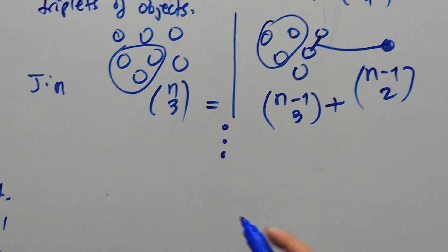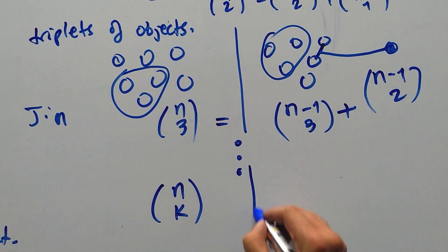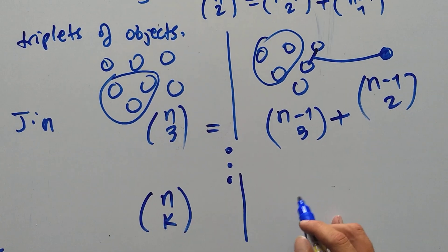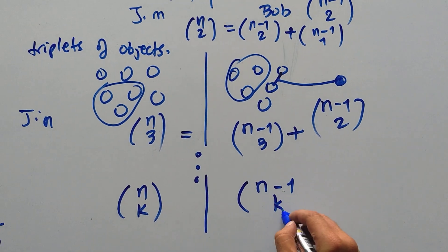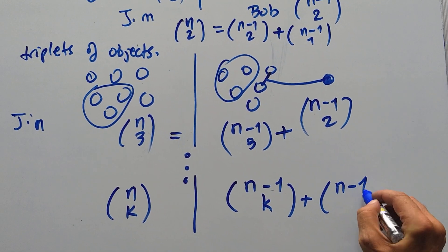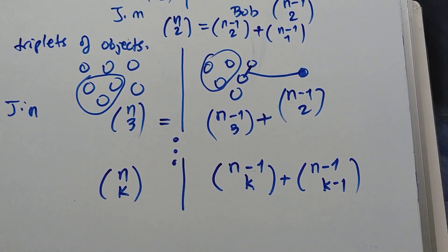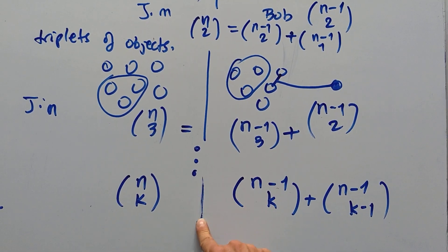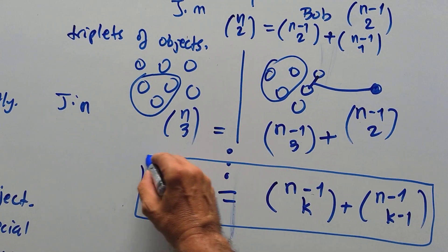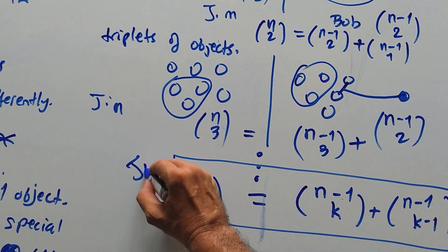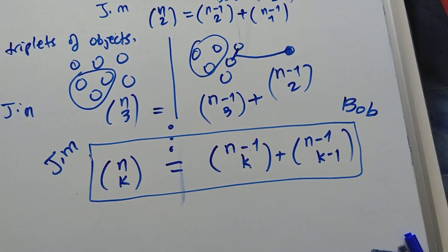Continuing this pattern: in general, n choose k equals (n−1 choose k) plus (n−1 choose k−1). Jim counts it as n choose k; Bob counts it as that sum. We end up finding this beautiful identity of binomial coefficients through the Jim and Bob combinatorial argument.